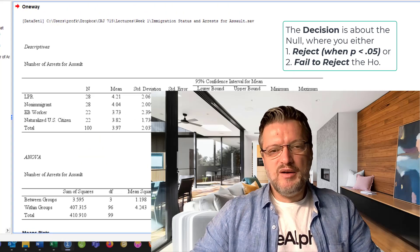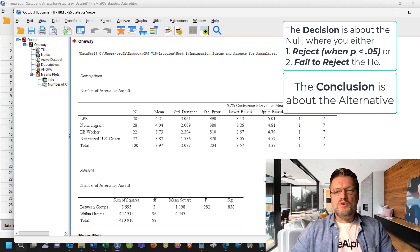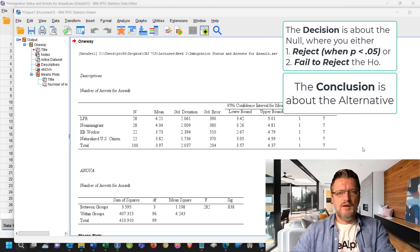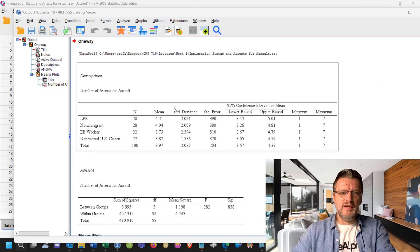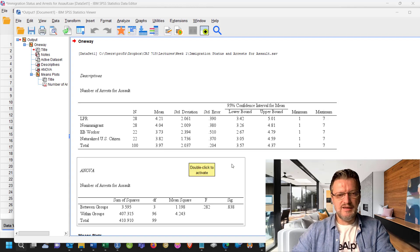So if we fail to reject the null hypothesis, the null hypothesis stands, and we do not accept the alternative hypothesis. Therefore, the decision about the null is that we fail to reject it. And the conclusion about the alternative hypothesis, or the researcher's point of view, is that we do not accept the alternative hypothesis. And what was that? That was that there was a difference between the number of arrests between these immigration statuses. And because we do not accept the alternative hypothesis, we can state that we do not have sufficient evidence to state that there is a significant difference between the mean number of arrests between each immigration status. Therefore, our initial research question, or research hypothesis, fails, because the idea was that different immigration statuses would have different number of arrests for assault. And in this case, we do see a small difference, but that difference does not appear to be significant.